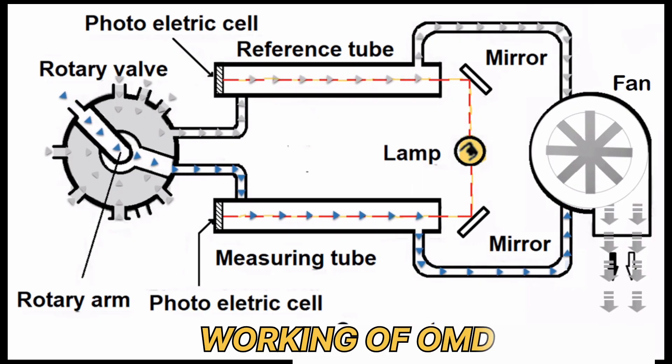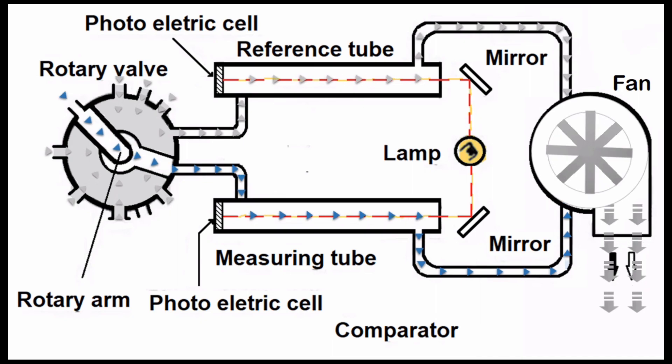Working of OMD: The arrangement of OMD consists of two tubes of the same size. One is called reference tube and the other one is called measuring tube. Both these tubes are placed parallel to each other.